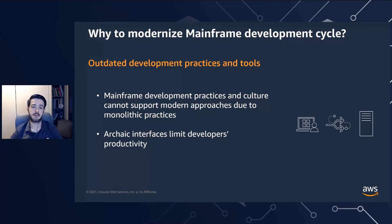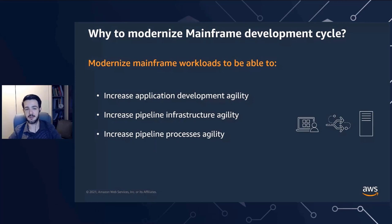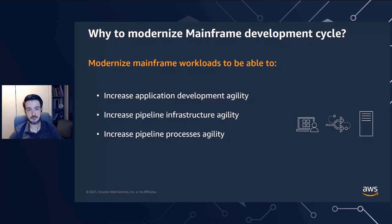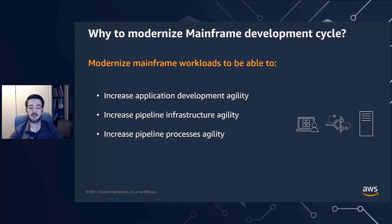Now that we know the three main reasons why customers want to modernize, what are the benefits? We can talk about three. First, an increase in application development agility — developing applications faster through a modern IDE with autocomplete, smart debugging, or instant code compilation. Second, an increase in pipeline infrastructure agility through a flexible environment that accommodates changes in demand for testing and development automatically. Finally, increased pipeline process agility through integration of tools and automation of the process.